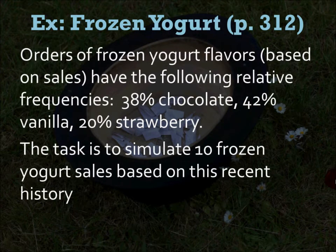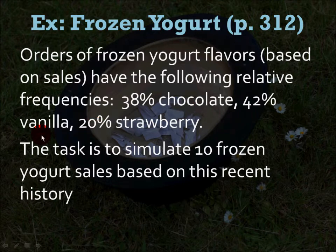Let's look at example 5.23: frozen yogurt. Orders of frozen yogurt flavors based on sales have the following relative frequencies: 38% chocolate, 42% vanilla, and 20% strawberry — obviously a very boring frozen yogurt shop. Your task is to simulate 10 frozen yogurt sales based on this recent history. Let's go through the five steps.